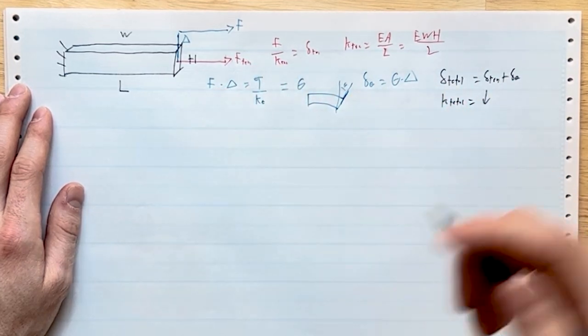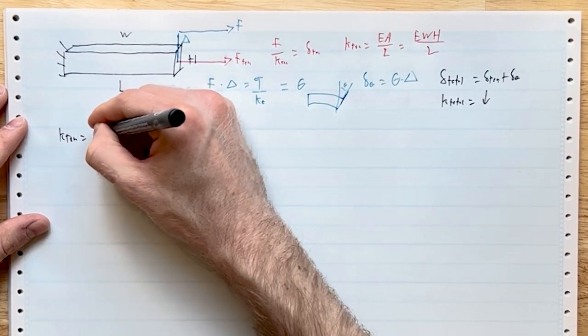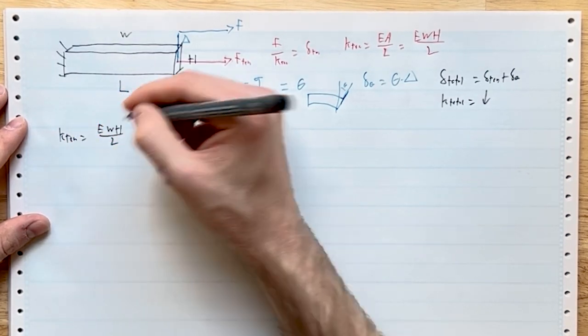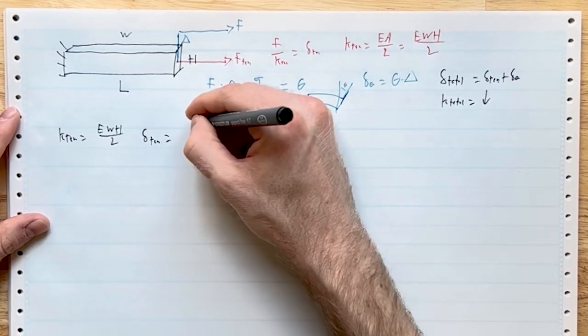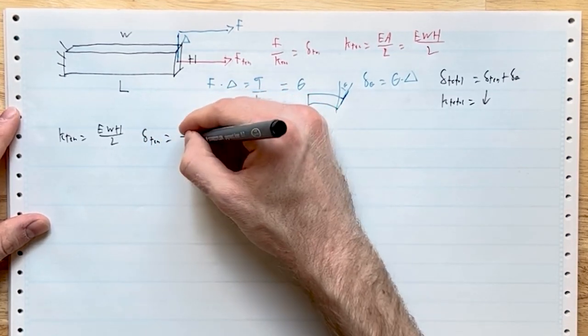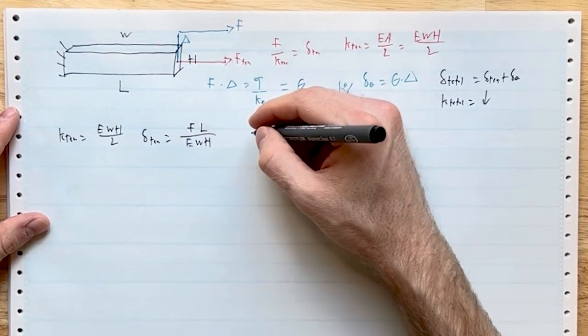Let's go through that in more detail. K_tension equals EWH over L, and therefore delta_tension is equal to FL over EWH. Honestly, with high modulus materials, this is pretty small.